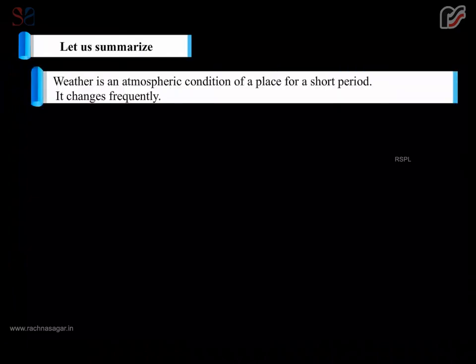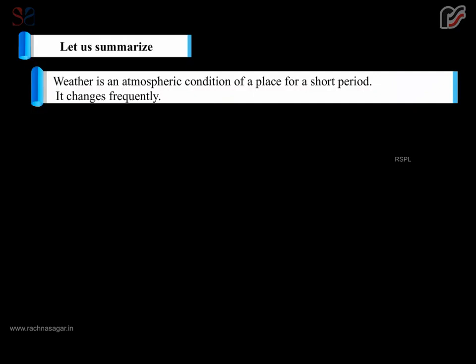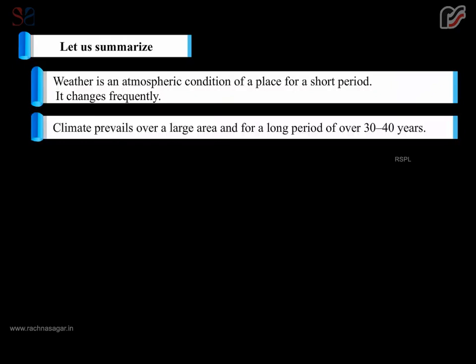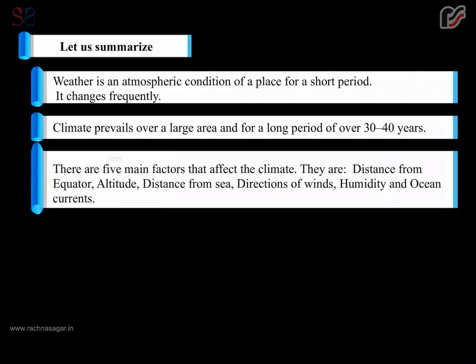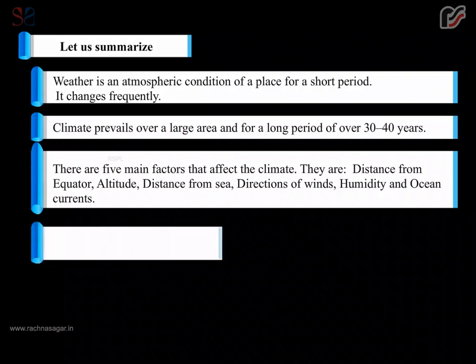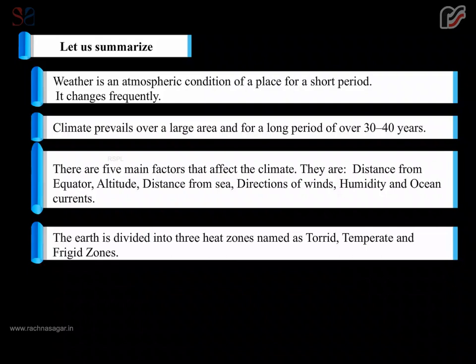To summarize: weather is an atmospheric condition of a place for a short period and it changes frequently. Climate prevails over a large area and for a long period of over 30 to 40 years. There are five main factors that affect the climate: distance from equator, altitude, distance from sea, directions of winds, humidity and ocean currents. The earth is divided into three heat zones named as torrid, temperate and frigid zones.